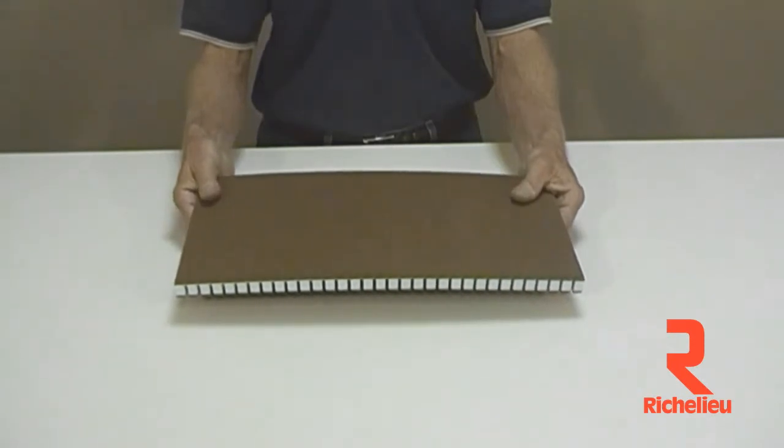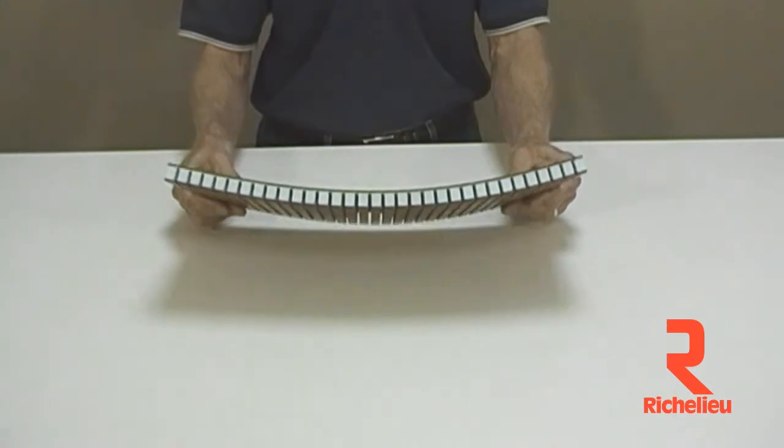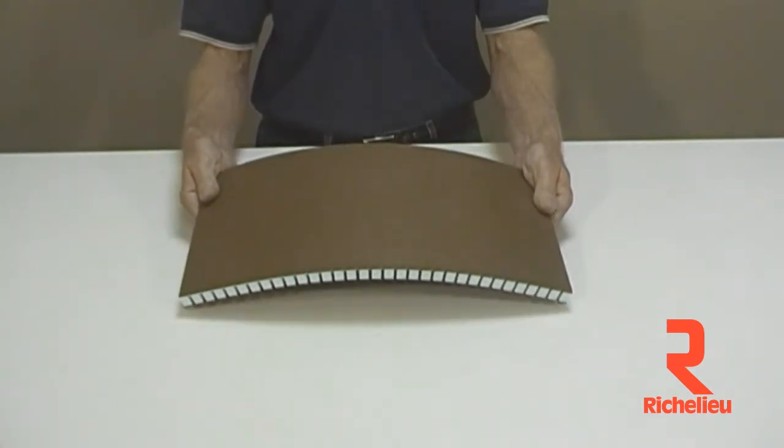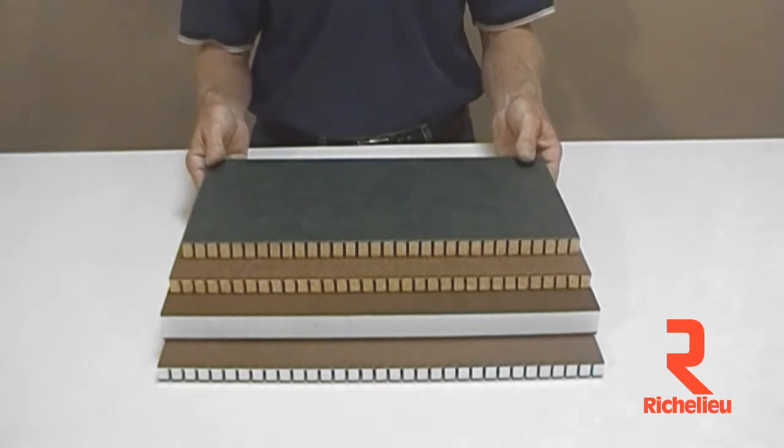It is the same as the foam core grain, except obviously, the curve allows for that bendability where you need to obtain some radius looks and still have that reduced weight requirement. All these products are also available in FSC chain of custody certification.